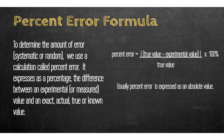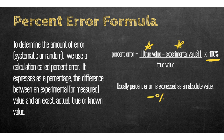Percent error is how we determine the amount of error — systematic or random. It expresses as a percentage the difference between the experimental or measured value and the true value, and is usually expressed as an absolute value. For our class, percent errors will always be positive.